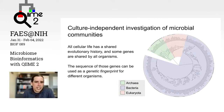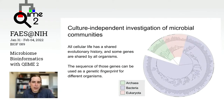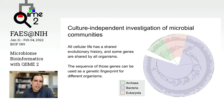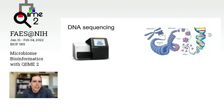I'm going to spend a minute talking about culture-independent investigation and how it works — this will be review for most folks, but I find it helpful for developing a common language before we dive in. These types of investigations make use of the fact that all cellular life has a shared evolutionary history and that some genes are shared by all organisms. The sequence of those genes can be used as a genetic fingerprint for different organisms. We typically use a DNA sequencing instrument, such as the Illumina MiSeq, which is very commonly used for studying microorganisms.